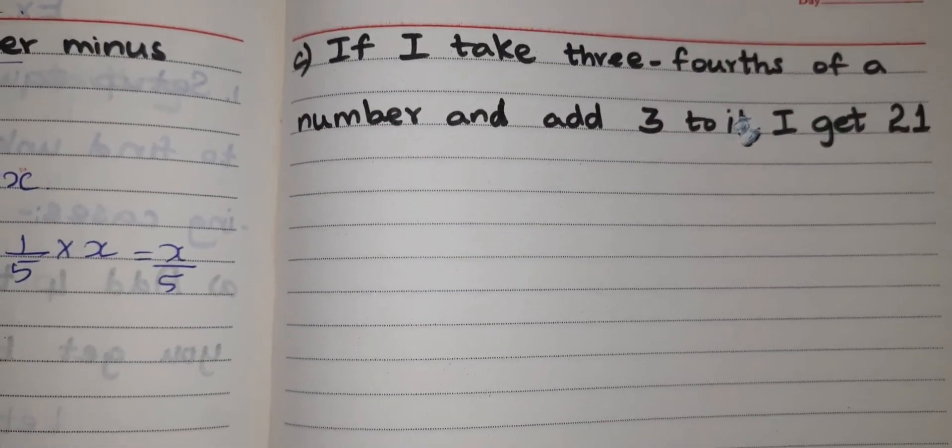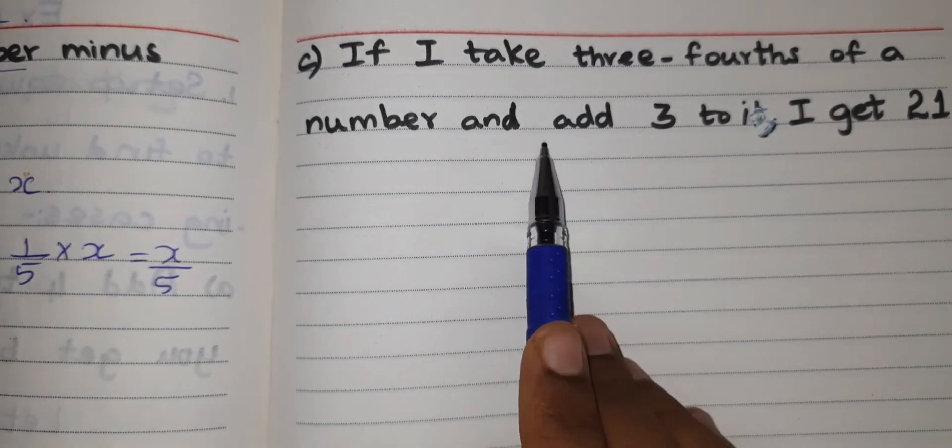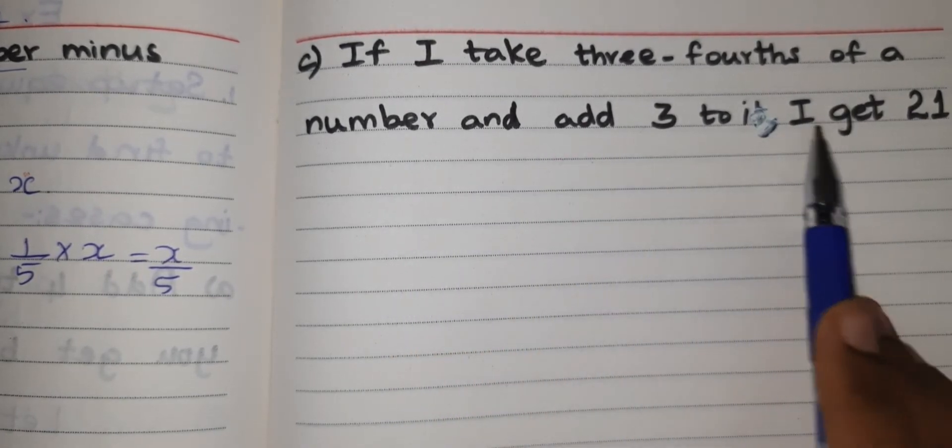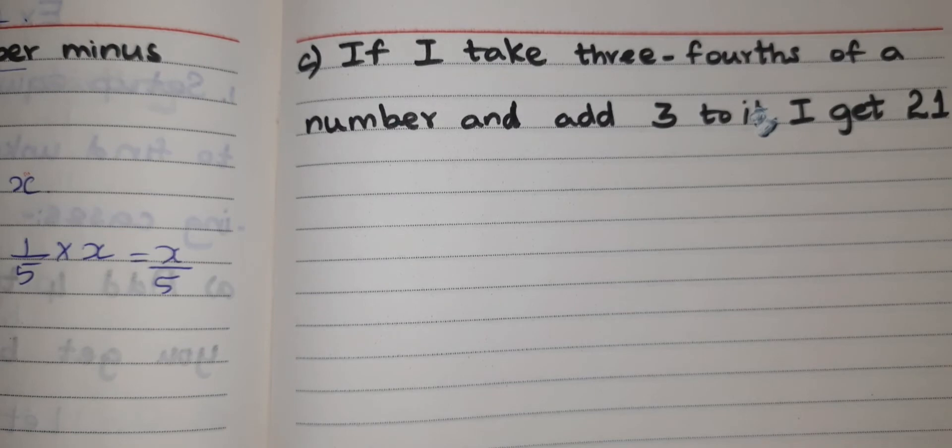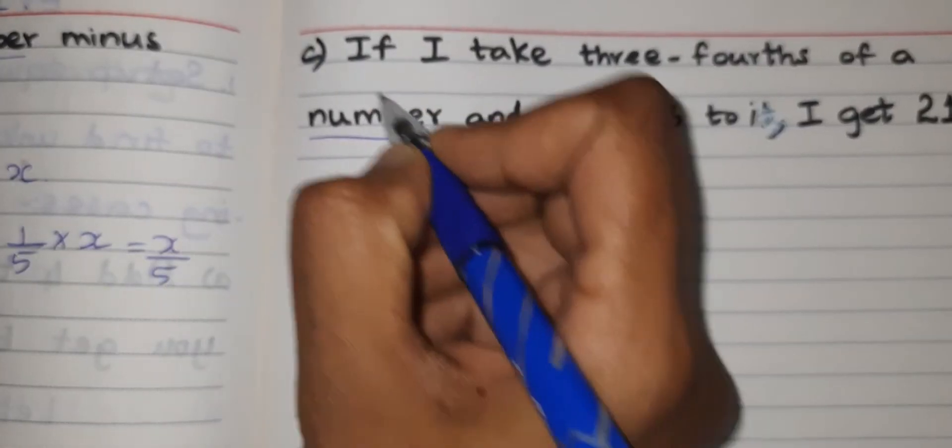So the answer is X equal to 35. Next, C part. If I take three-fourths of a number and add 3 to it I get 21.